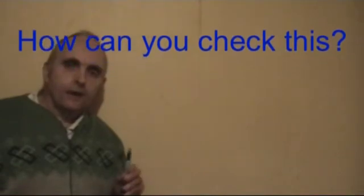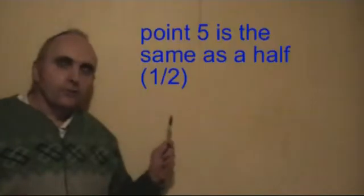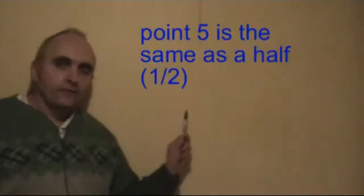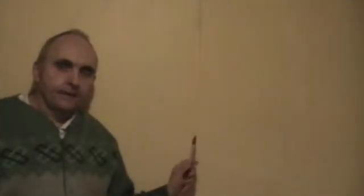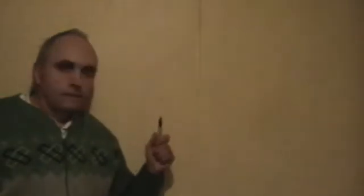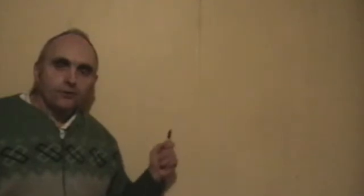To check that that was right, you could do it in two ways. You could treat the 2.5 as 2.5. Now you've divided by 10, so to check it, you have to multiply by 10. So you take 10 times 2.5.